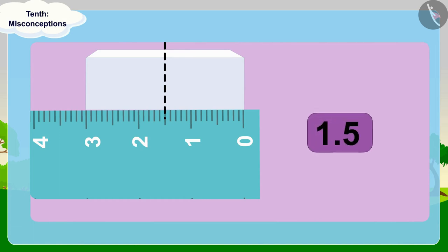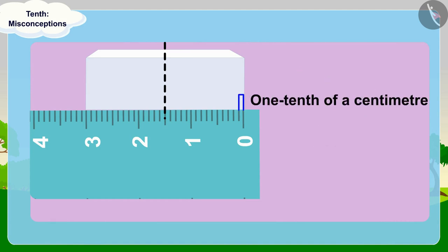We also know that one tenth of a centimeter is equal to one millimeter. So five tenths of a centimeter will be equal to five millimeters. Bunny's statement is absolutely correct.